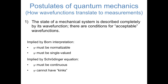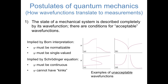Probably the easiest way to wrap our minds around all of these conditions is to look at some examples of wave functions that are not acceptable by this postulate. If we go through these wave functions one by one, you can see that wave function A is not continuous, wave function B is not smooth, wave function C isn't single-valued, and wave function D can't be normalized because it goes to infinity. So all of the wave functions that we'll come across in this course have to be well-behaved: continuous, smooth, single-valued, and normalizable.